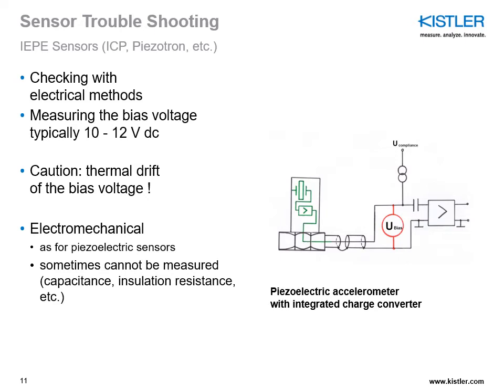Test two: with certain sensors, changes in temperature can shift the bias voltage so that the measuring range is exceeded and the signal is clipped. It is important to measure the bias voltage at the expected operating temperature. Test three: check the sensitivity at a reference frequency. A change in sensitivity indicates that the internal charge converter is faulty. The sensitivity can increase or decrease, and any change indicates possible damage.